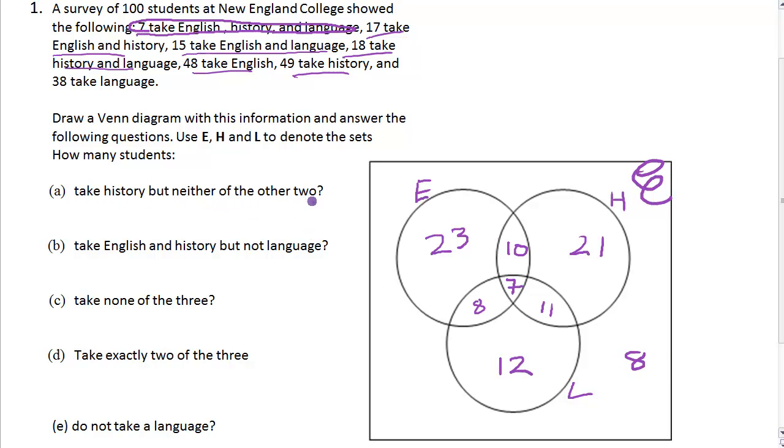but neither the other two? Let's choose a different color to make it easier to see. Take History but neither the other two is 21. We've got History is 21 because we don't take English and we don't take Language - we just want History only.